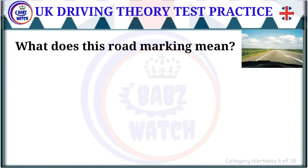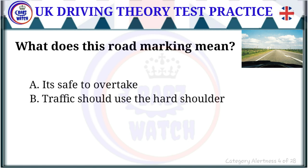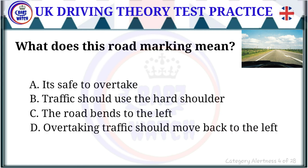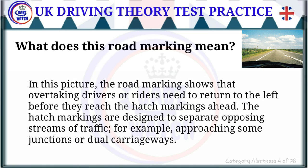Question 4 of 28: What does this road marking mean? The correct answer is: overtaking traffic should move back to the left. The road marking shows that overtaking drivers or riders need to return to the left before they reach the hatch markings ahead. Hatch markings are designed to separate opposing streams of traffic, for example approaching some junctions or dual carriageways.